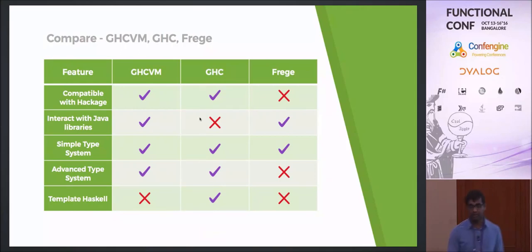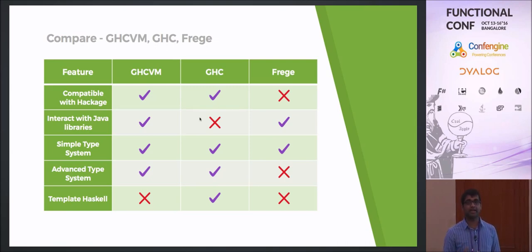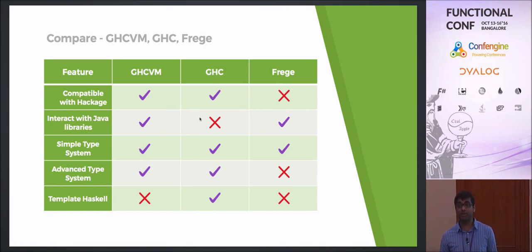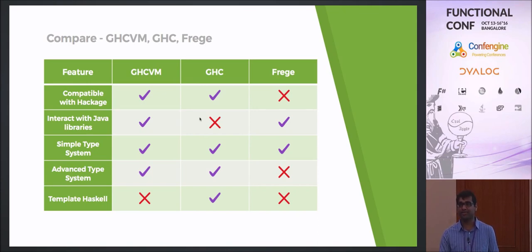GHCVM is compatible with Hackage — I'll give a link at the end showing all the packages that are compatible now. Frege is somewhat compatible with Hackage, but because it doesn't have all the GHC features used by Hackage libraries, you can't compile out of the box. But you can with GHCVM. You can also interact with Java libraries; technically GHC can do this through JNI, but it's very difficult. With GHCVM you can easily merge in any Java library you want.